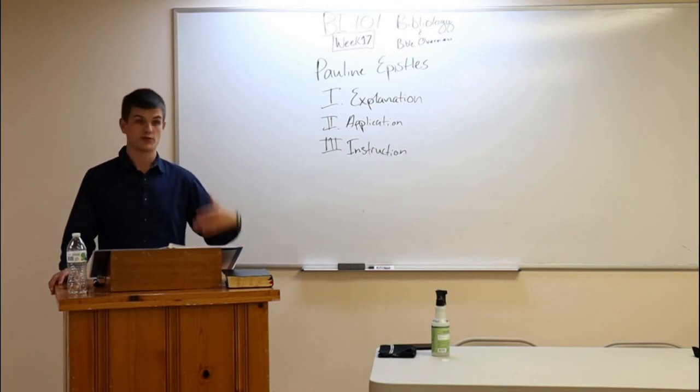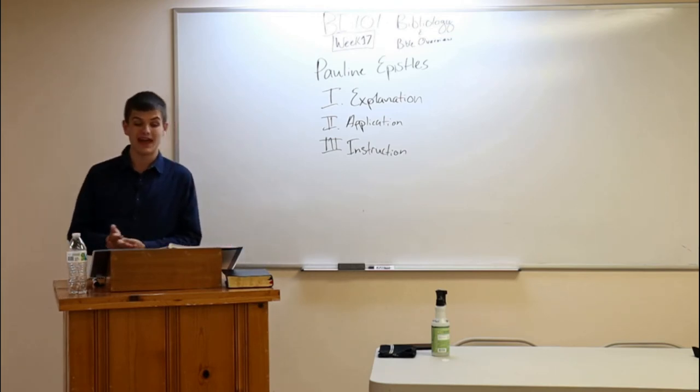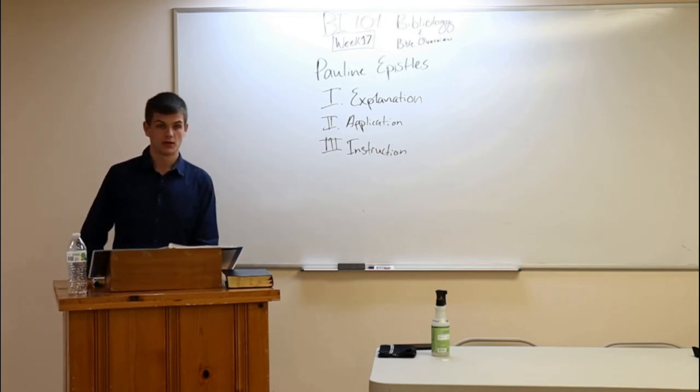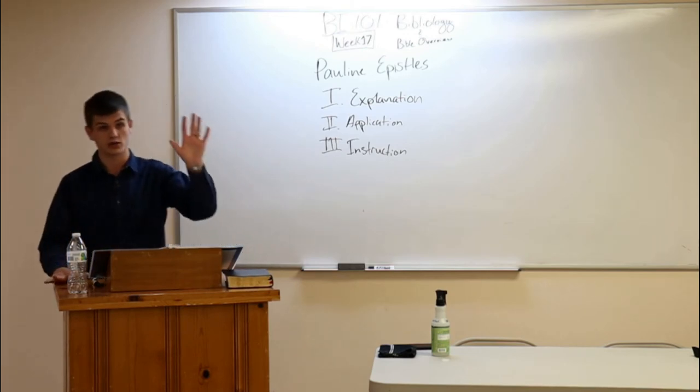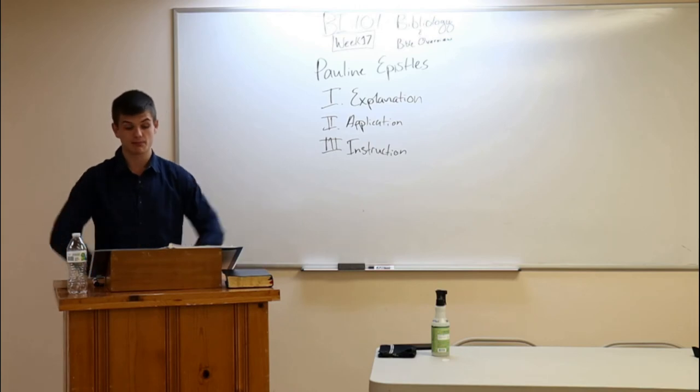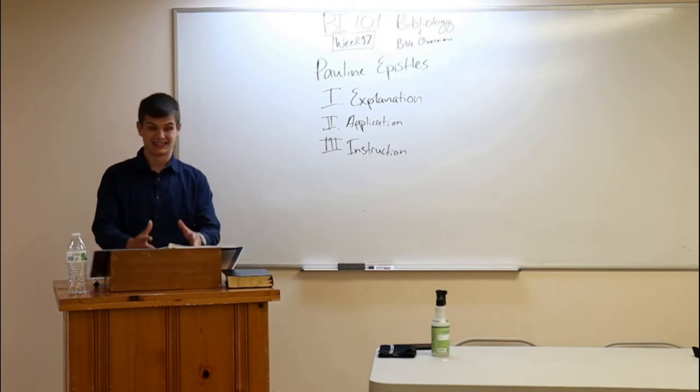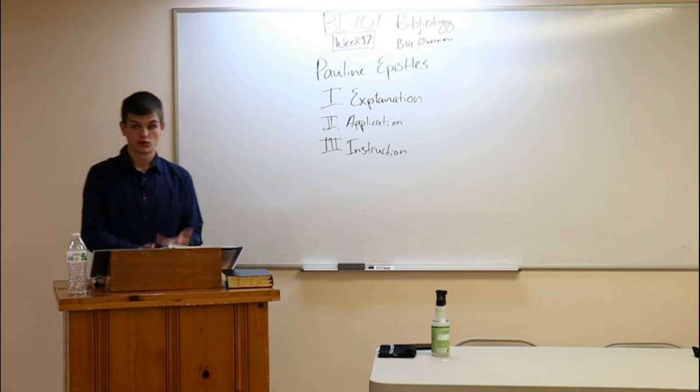Paul begins Romans with a letter to the saints which are at Rome. And then in chapters 1 through 11, he explains the doctrines of the gospel. The doctrine of sin, the doctrine of justification, the doctrine of sanctification, the doctrine of perseverance of the saints, the doctrine of election. He explains the doctrines of the gospel. Then in chapters 12 through 14, he applies the doctrines practically.